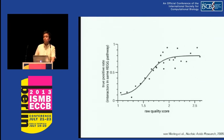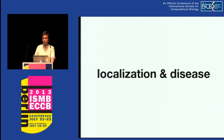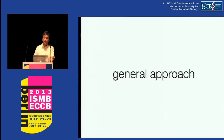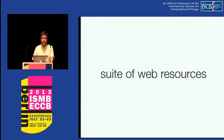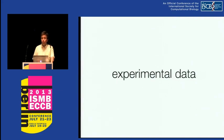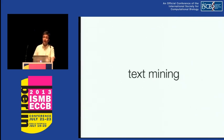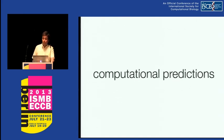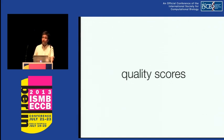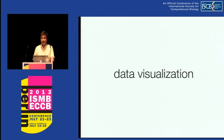What I've more recently started doing in my group is to ask: can we do the same kinds of things for localization and for disease associations? Because this is a completely general approach. We're developing a whole suite of web resources that take this general approach — combining curated knowledge with whatever experimental data is available, text mining for associations between proteins and compartments, tissues, diseases, and so on, combined with computational prediction methods, assigning quality scores to everything, trying to make it comparable and visualize it nicely.